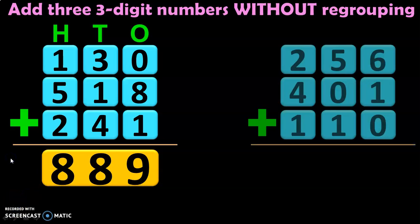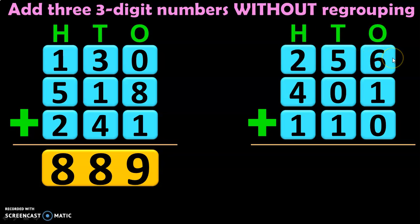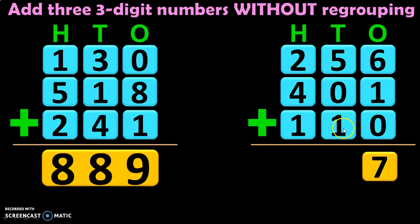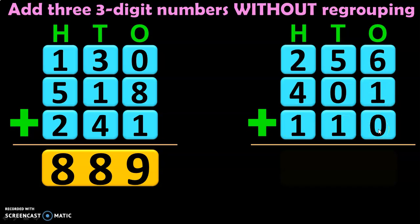Let us do another example: 256 plus 401 plus 110. Write the place values: ones, tens, and hundreds. Begin by adding the digits in the ones place. 6 plus 1 is 7, and 7 plus 0 is 7. Move to the tens: 5 plus 0 is 5, and 5 plus 1 is 6. Next, move to the hundreds: 2 plus 4 is 6, and 6 plus 1 is 7. So, 256 plus 401 plus 110 gives you the answer 767.